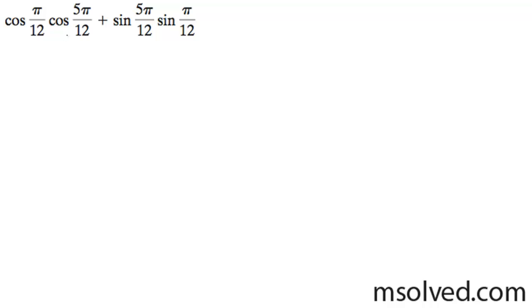What we're going to do here is recognize this is in the form cosine of alpha minus beta. Our alpha in this case is right here and our beta is right here.